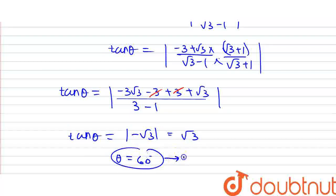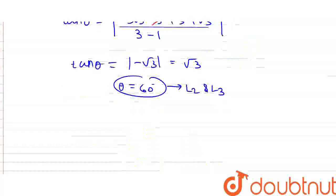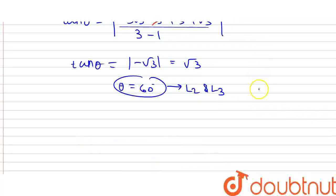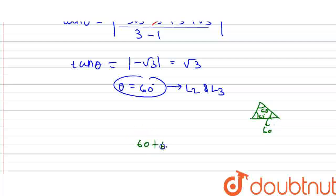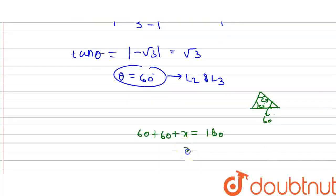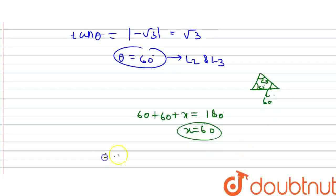So the angle between line 2 and line 3 is also 60 degrees. Now we know that the angle between line 1 and 2 is 60 degrees, and the angle between line 2 and 3 is 60 degrees. By the angle sum property of a triangle, if two angles are 60 degrees each, then 60 plus 60 plus the third angle equals 180, so the third angle is also 60 degrees. Therefore all three angles are 60 degrees, meaning the triangle is an equilateral triangle.